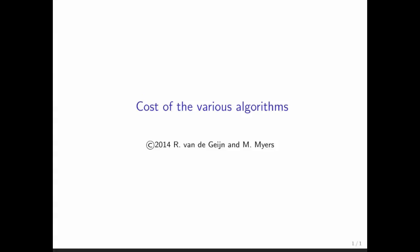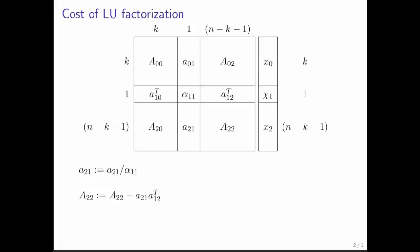Now that we have algorithms that together can solve Ax equals b, let's look at what the cost is of these algorithms. To analyze this, we need to partition our matrices and our vectors.